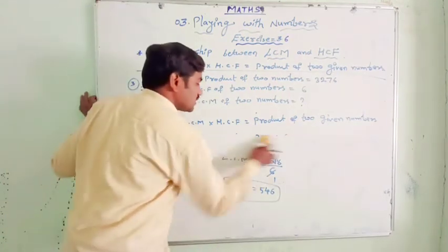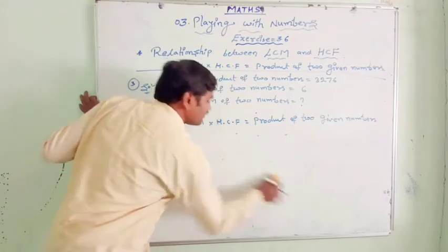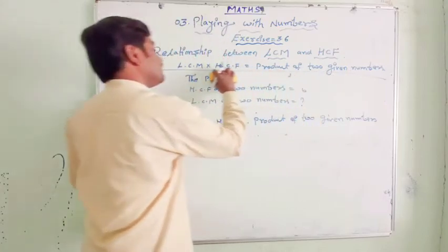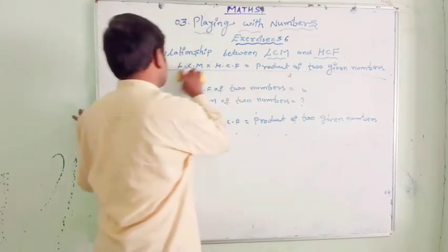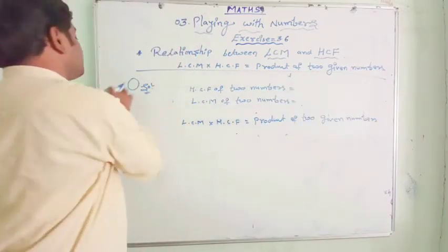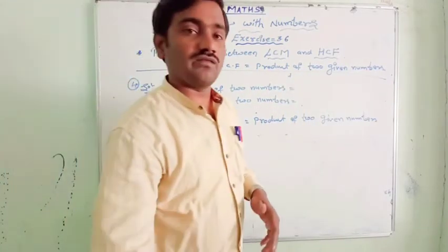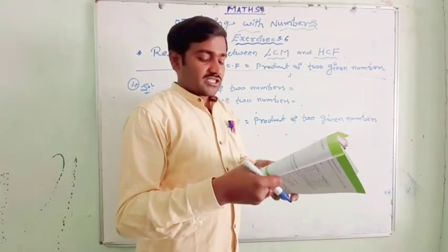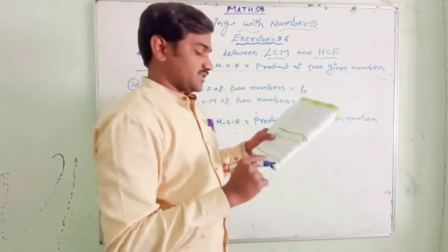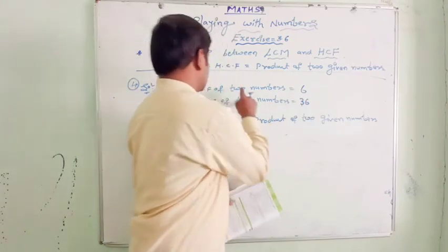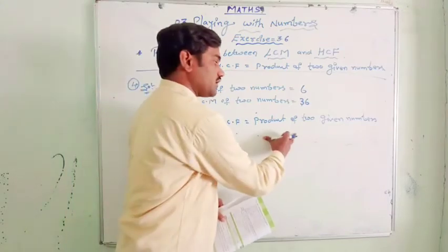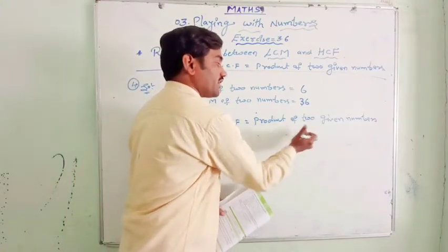I hope you understood that. There is one more question. Let us see the fourth and last question of this exercise. The HCF of two numbers is 6 and the LCM is 36. Both HCF and LCM are given. On the other side, the product of two numbers means one of the numbers is given and the other number we need to find out.